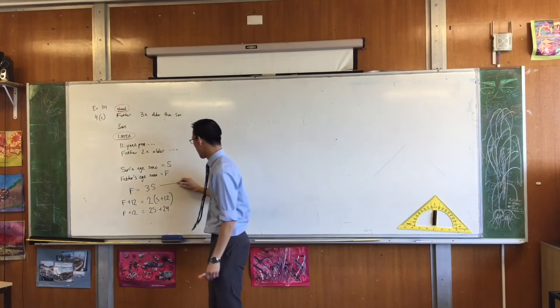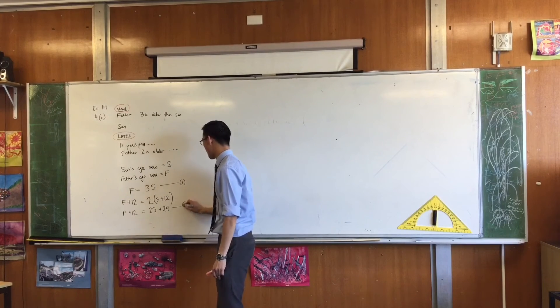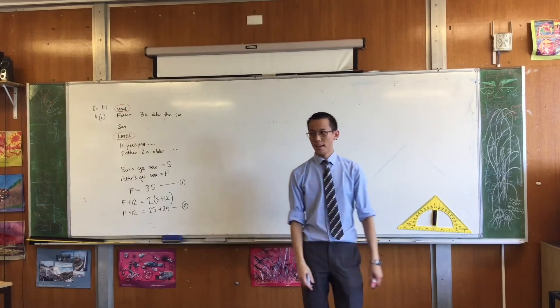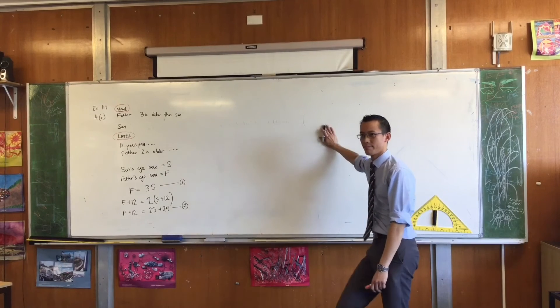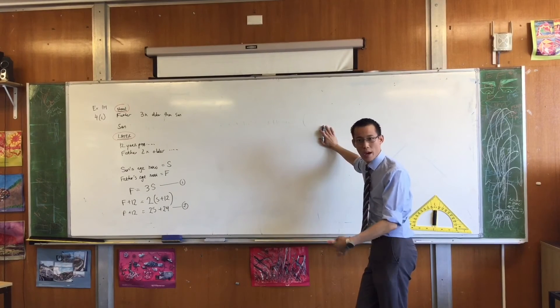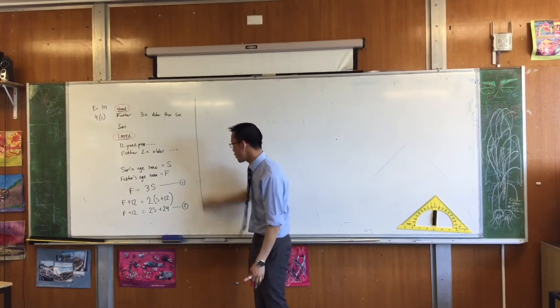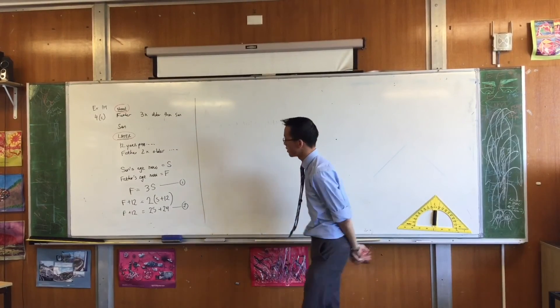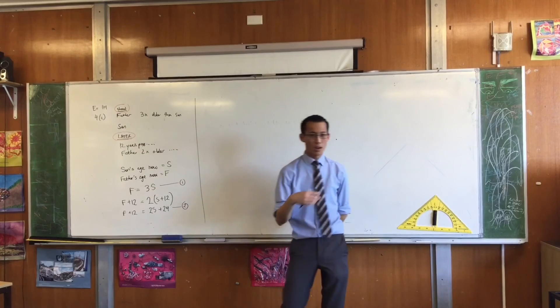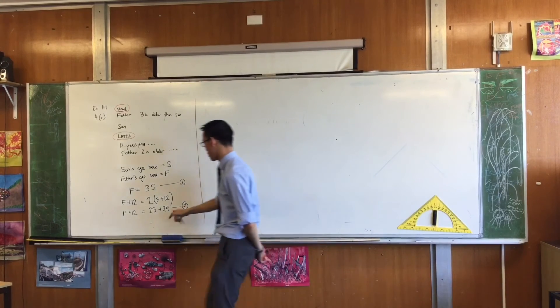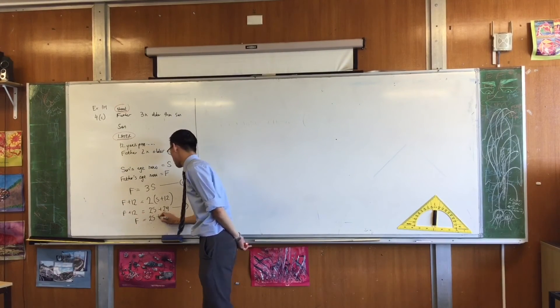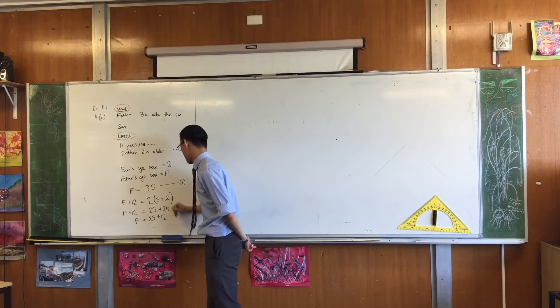So you can see I've got an equation here, I've got an equation here. Does it check out? No. Do you agree with how I got those numbers and how I arranged them? So if you agree with that, well let's just see where it takes us. You've got equation one, you've got equation two. Actually I should have tidied up a bit further. F equals 2s plus 12. Let's call that equation two, shall we?